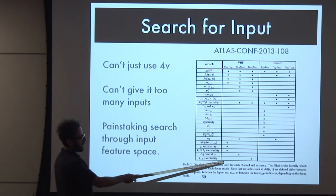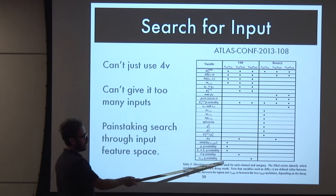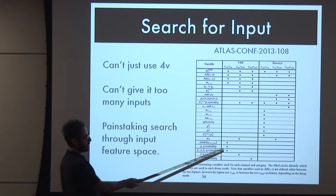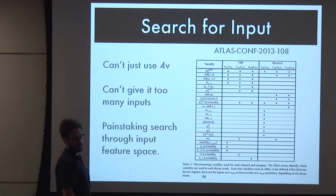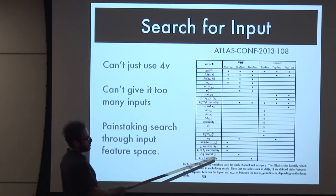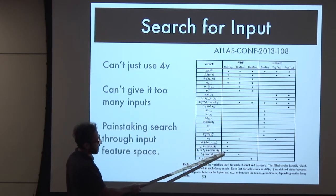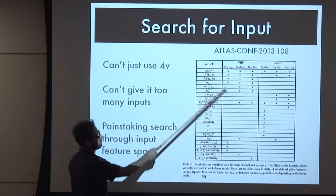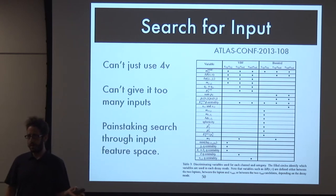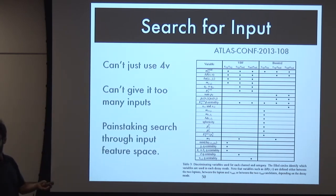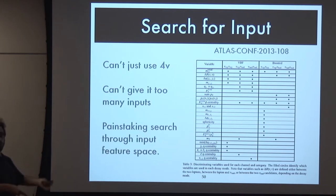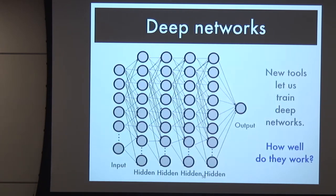They did this because you needed to add physics preprocessing - you can't just throw the data at your network and assume it will figure everything out. They found the optimal network used seven variables out of twenty, and every time the Monte Carlo was updated they had to redo this painstaking search through input space. This created a whole field called feature selection: how do you choose what information to give your network, given that shallow networks cannot learn nonlinear functions.